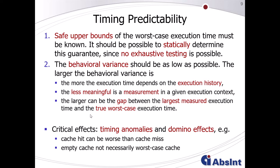I'd like to introduce the concept of timing predictability of a processor. A processor has high timing predictability if the behavioral variance is low, and lower timing predictability if the behavioral variance is higher. When determining worst-case timings, you also have to take into account critical hardware effects like timing anomalies or cache domino effects. A timing anomaly, for instance, is when a local non-worst-case decision like a cache hit leads globally to worse timing behavior than the local worst-case decision like a cache miss.